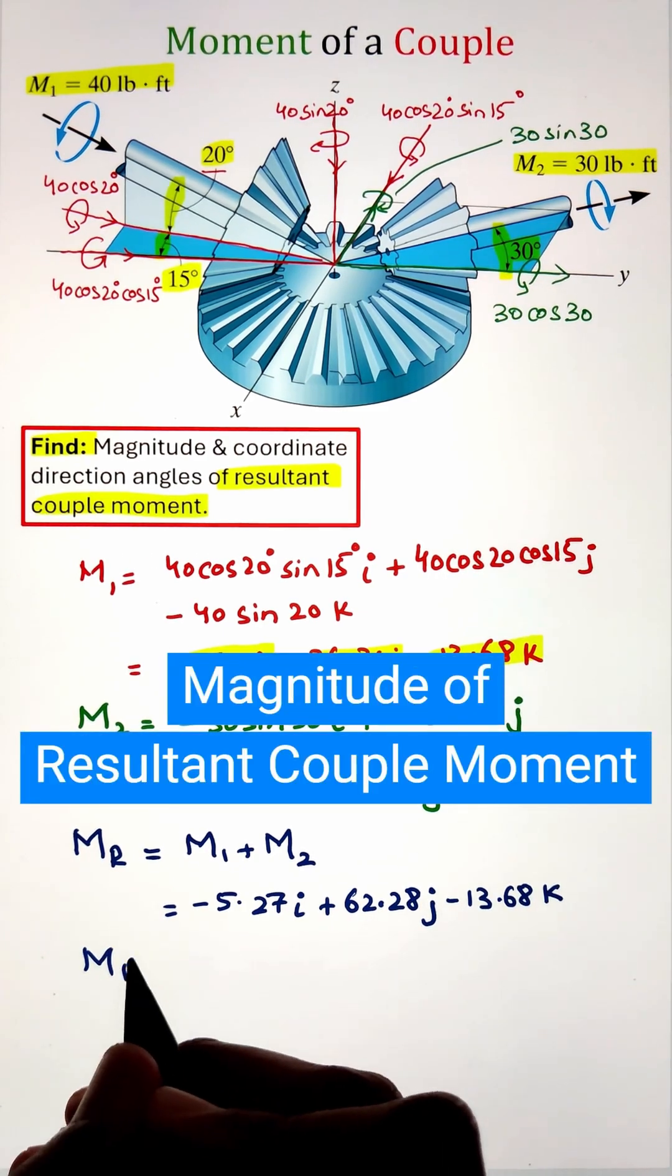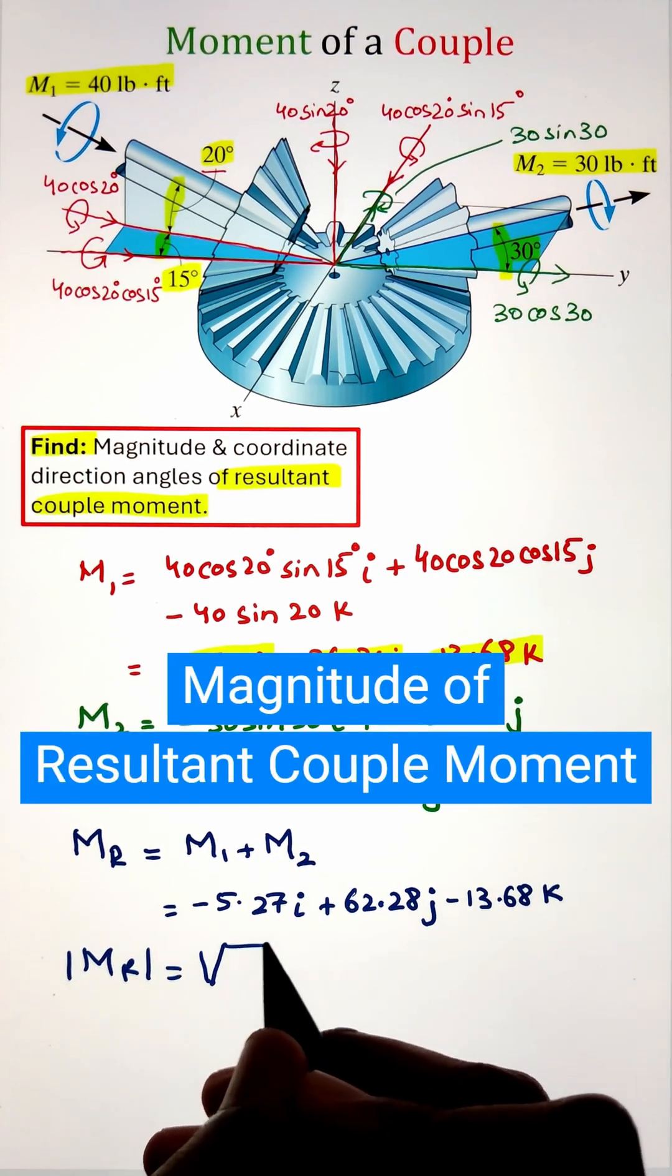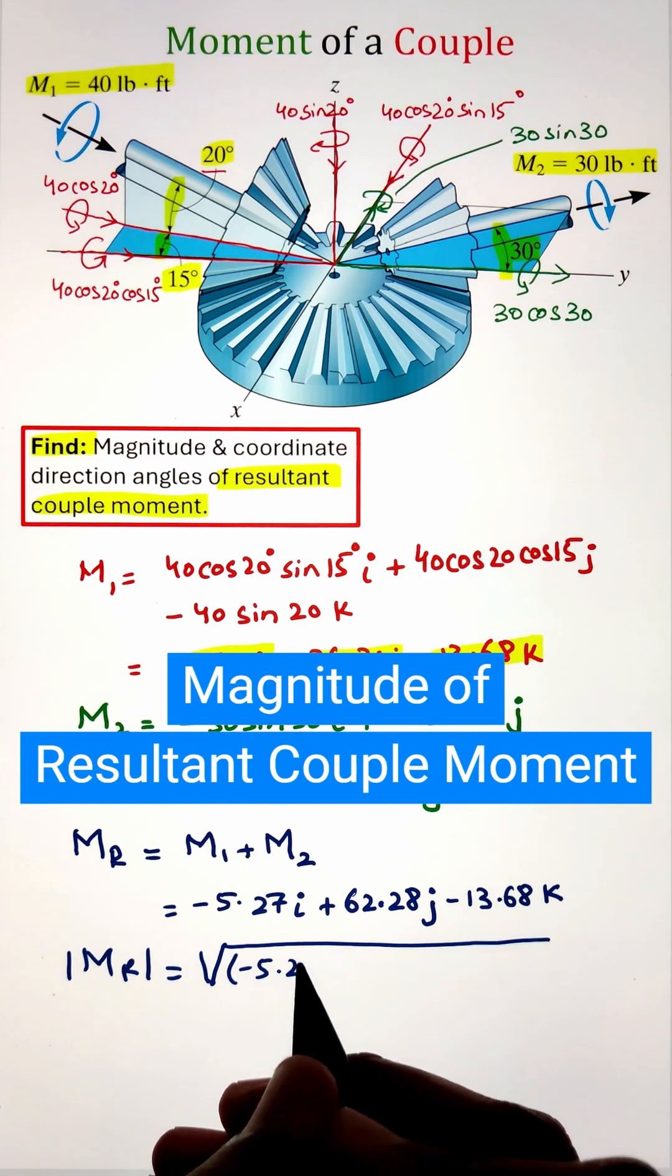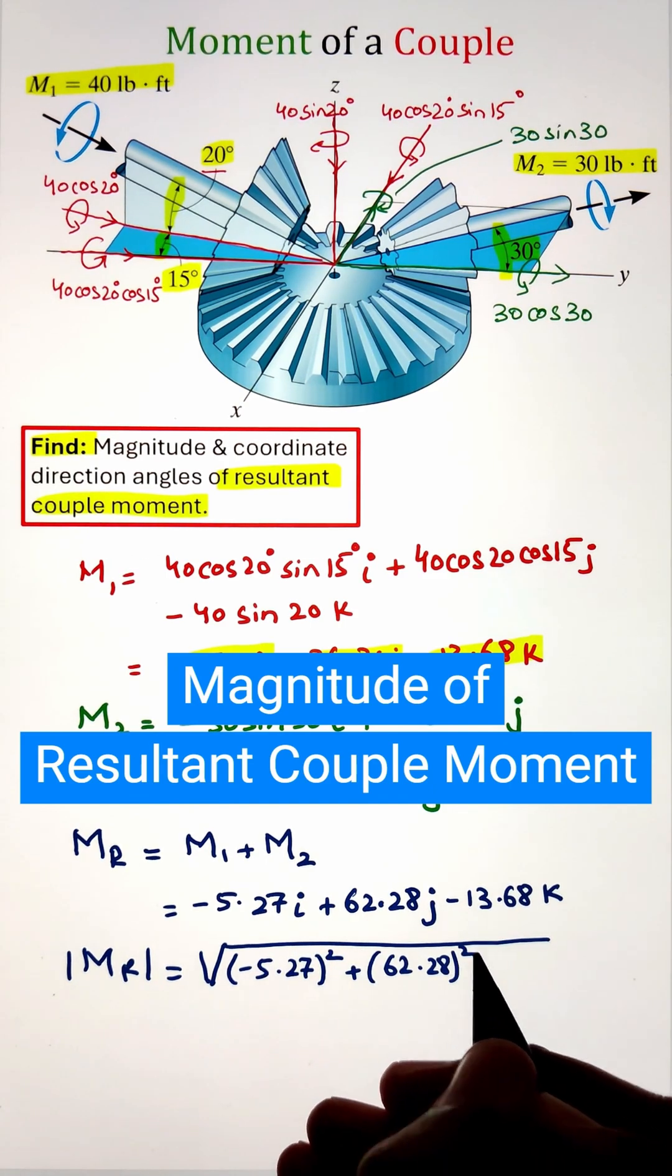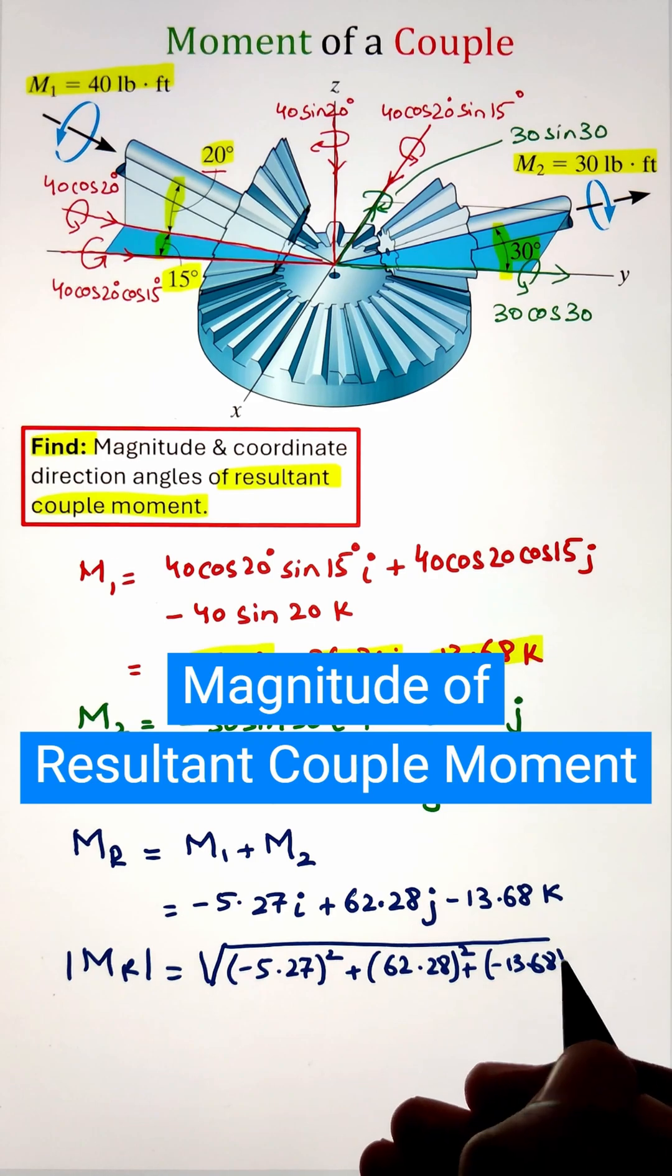Now, to calculate the magnitude, we can utilize the magnitude formula. That is the square root of the x-component squared plus y-component squared plus z-component squared. This gives us the value of 64 pound feet.